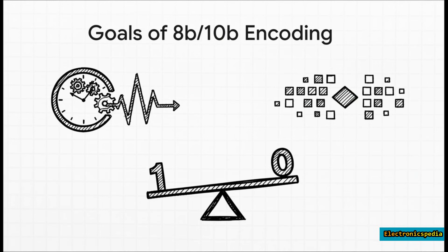This new format was designed with three big goals in mind. First, guarantee those frequent flips between ones and zeros to keep the receiver's clock perfectly in sync. Second, maintain that super important DC balance. And as a really cool bonus, it also gives you these special control characters, or K-codes, that you can use for things like signaling the start of a data packet, keeping them totally separate from your actual data.